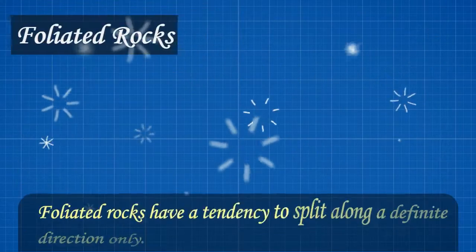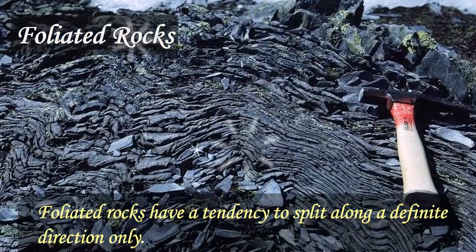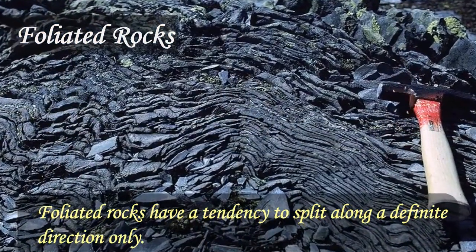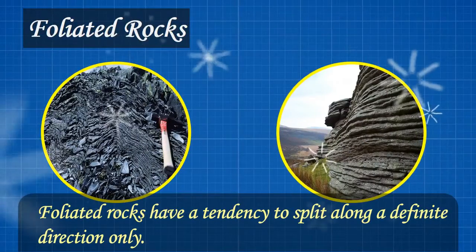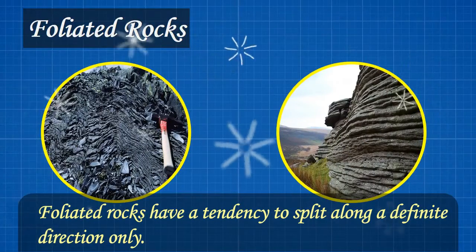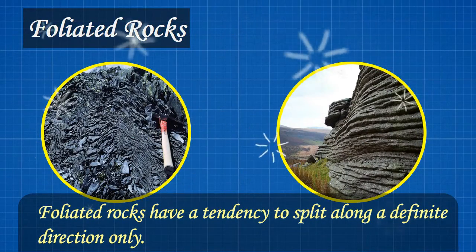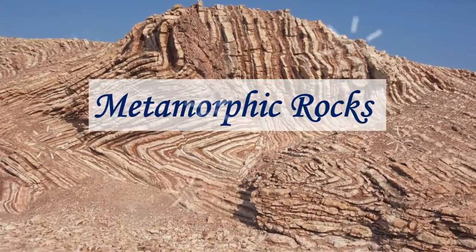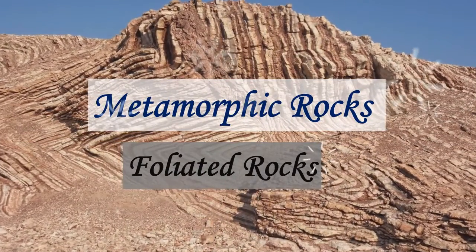Foliated rocks have a tendency to split along a definite direction only. This direction need not be parallel, as in the case of stratified rocks. Metamorphic rocks are commonly foliated rocks.